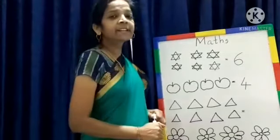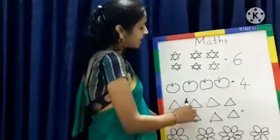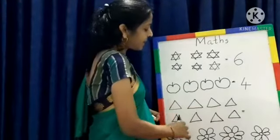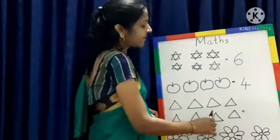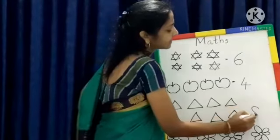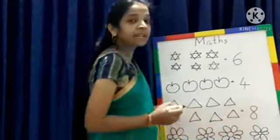How many triangles are there? 1, 2, 3, 4, 5, 6, 7, 8. Write number 8.